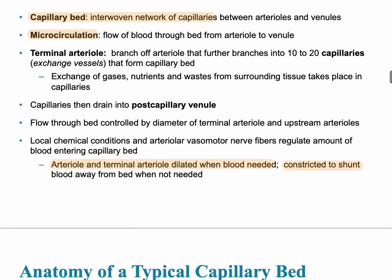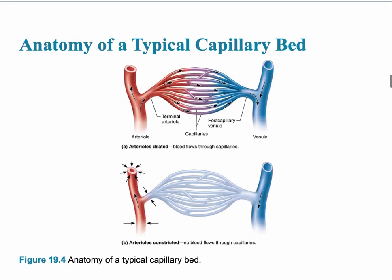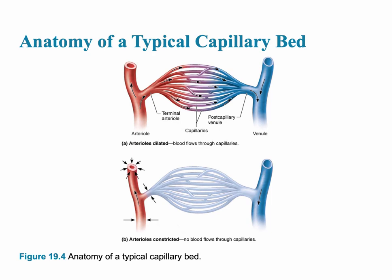Let's look at the anatomy of a typical capillary bed. The capillary bed is going to have the arterial end, where blood is leading into the capillaries. It starts at the terminal arteriole — that's the end of the arteriole — leading into the capillary. There are pre-capillary sphincters that constrict or dilate, and they're controlled by the autonomic nervous system. Then leading out of the capillary is the post-capillary venule, which also plays a role in whether blood goes into this capillary area or not.